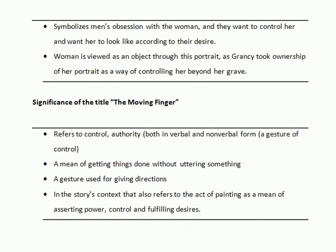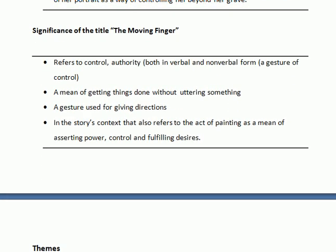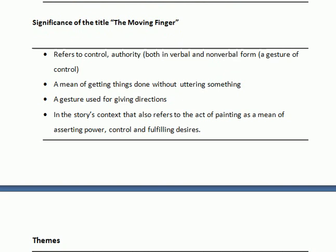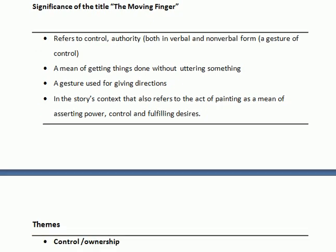The title, The Moving Finger, is very significant because this is a story of control where everybody wants to control the other, and particularly both men want to have control upon the woman. The title refers to control and authority, both in verbal and non-verbal form. The moving finger is a means of getting things done without uttering something — a gesture used for giving directions. In the story's context, it also refers to the act of painting as a means of asserting power, control, and fulfilling desires.